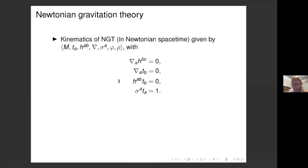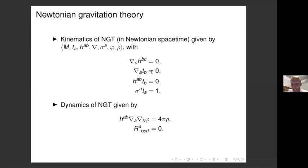In a coordinate-independent presentation, the kinematics of Newtonian gravitation theory set in Newtonian spacetime would be given by more complicated tuples: the manifold M, T representing Newtonian absolute time, H giving Newtonian absolute space, Nabla giving a standard of straightness across time, Sigma a vector field telling you the persisting points of absolute space, Phi the gravitational potential, and rho the matter density. These objects satisfy various compatibility and orthogonality relations. The dynamics are given by the Newton-Poisson equation and a flatness condition.